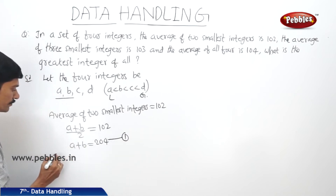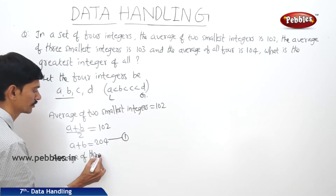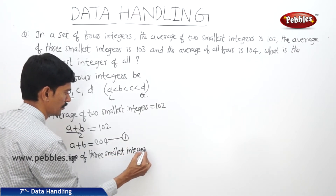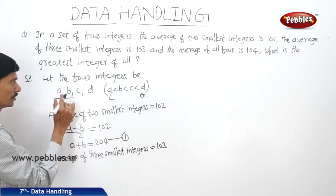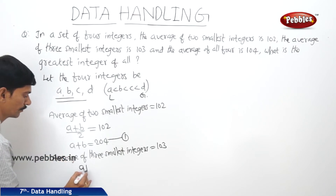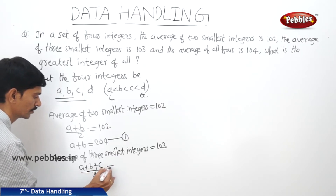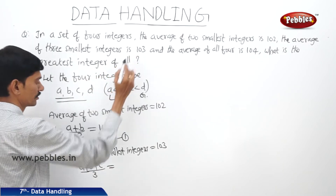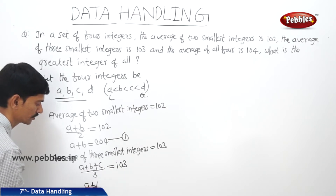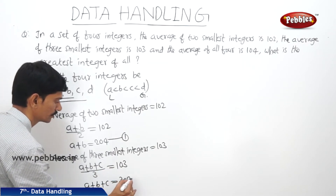The average of three smallest integers equals 103. So the three smallest integers are A, B, and C. Then A plus B plus C divided by 3 equals 103. By cross multiplication, we get A plus B plus C equals 309. This is the second equation.